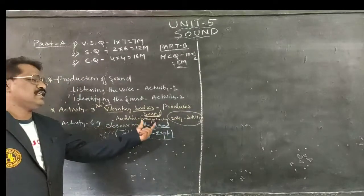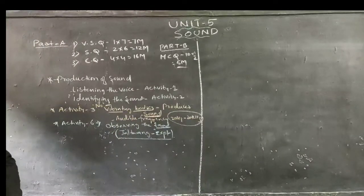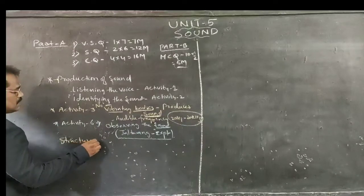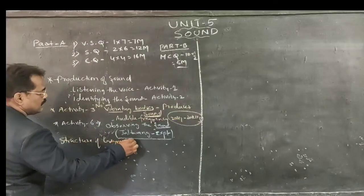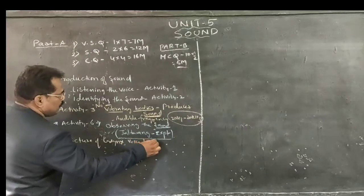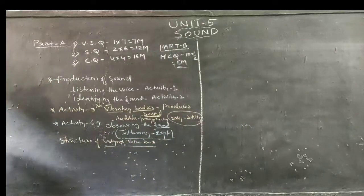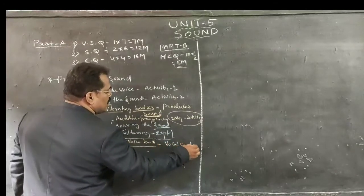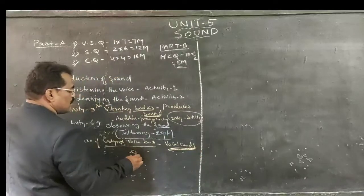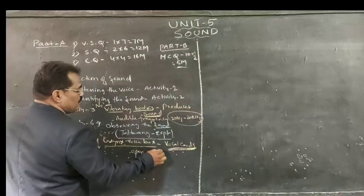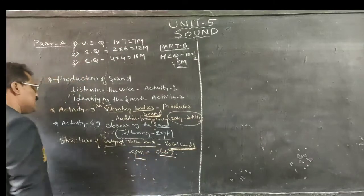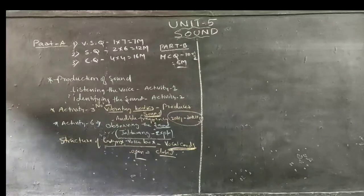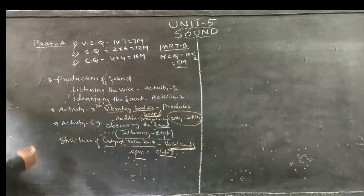Next, we are having the structure of the voice box. How will this particular voice box be, and within this voice box, what vocal cords will be there? Vocal cords will be there. If these vocal cords are open, or if these vocal cords are closed, what happens within the voice box?